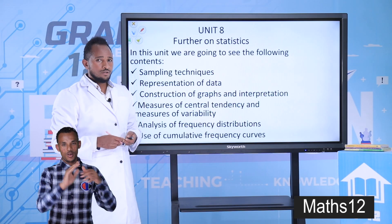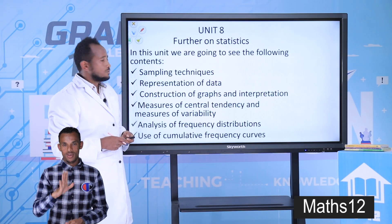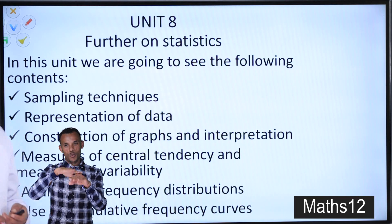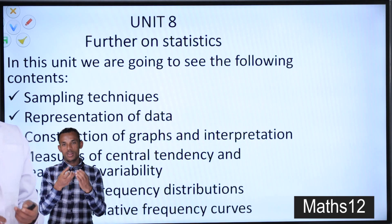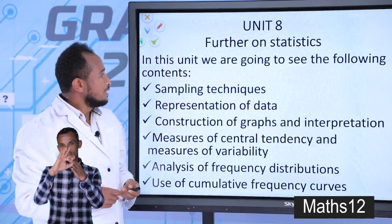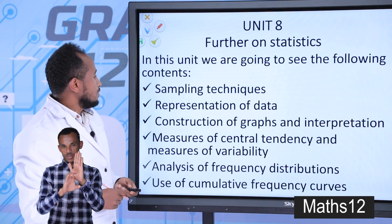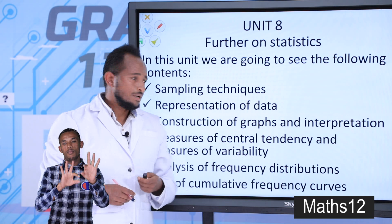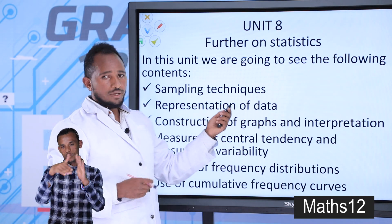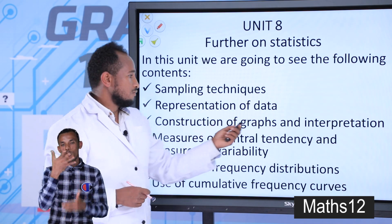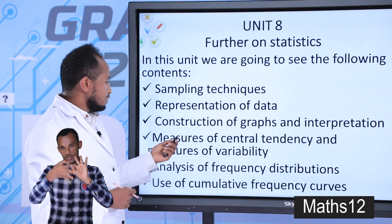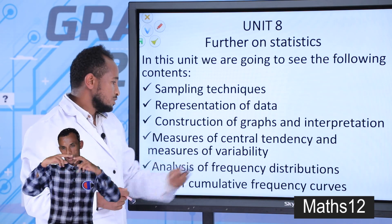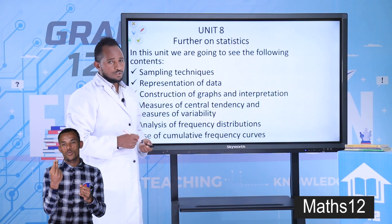Hello dear students, how are you doing? I'm very fine. Today we are going to start Unit 8, which is about further statistics. By the way, this part is designed for social science students only. In this chapter we will cover: sampling techniques, representation of data, construction of graphs and interpretation, measures of central tendency, measures of variability, analysis of frequency distributions, and use of cumulative frequency curves.